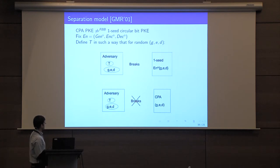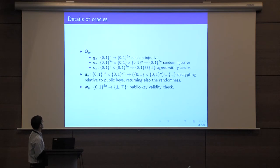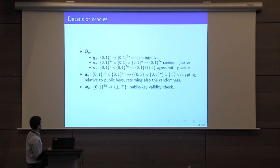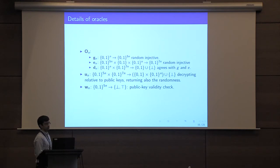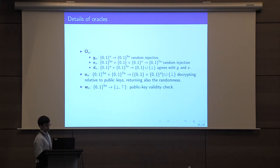Let me describe how the ideal base implementation GED is sampled. We sample the key generation algorithm and the encryption algorithm at random, then define the decryption algorithm accordingly. We also define two side oracles: oracle U will decrypt ciphertexts relative to public keys, also outputting the underlying randomness, and oracle W checks whether a given public key is valid. In our security proofs, we will not give the adversary unrestricted access to U.